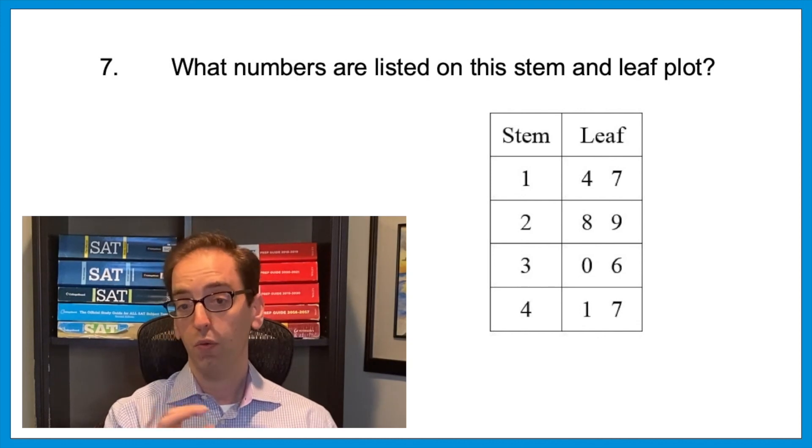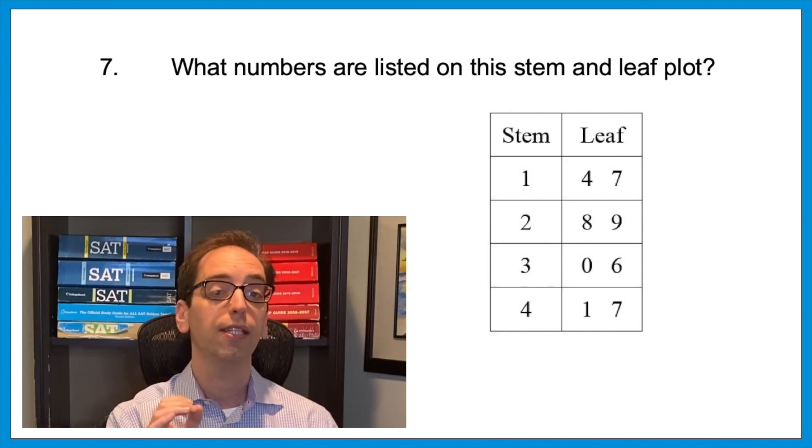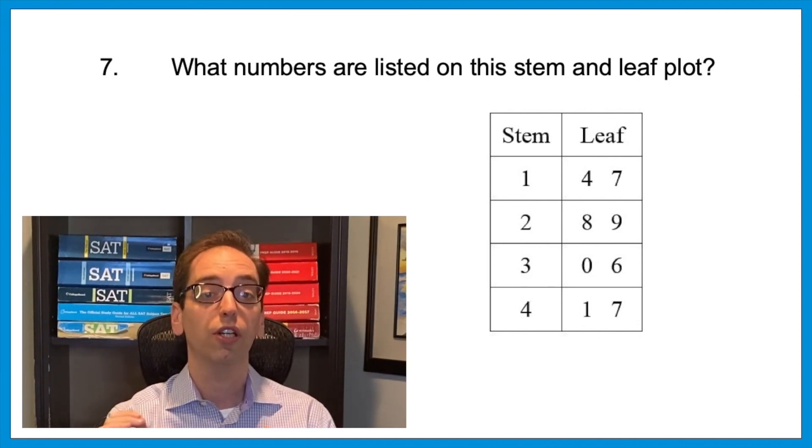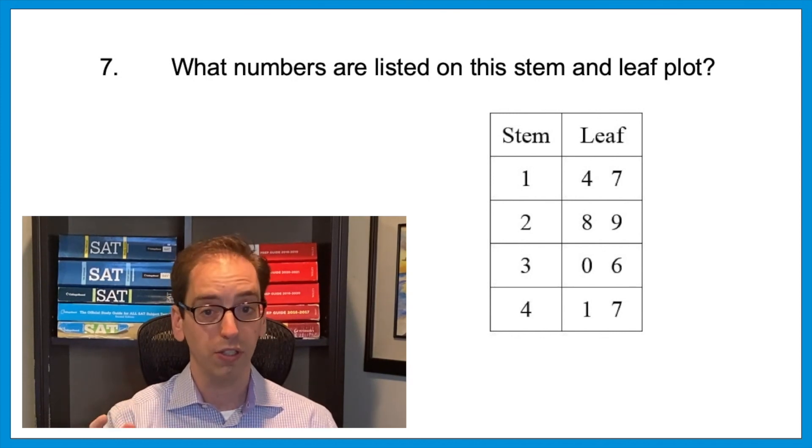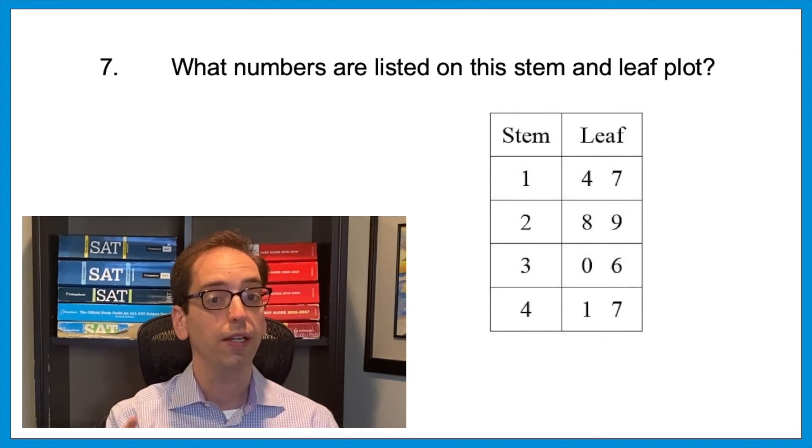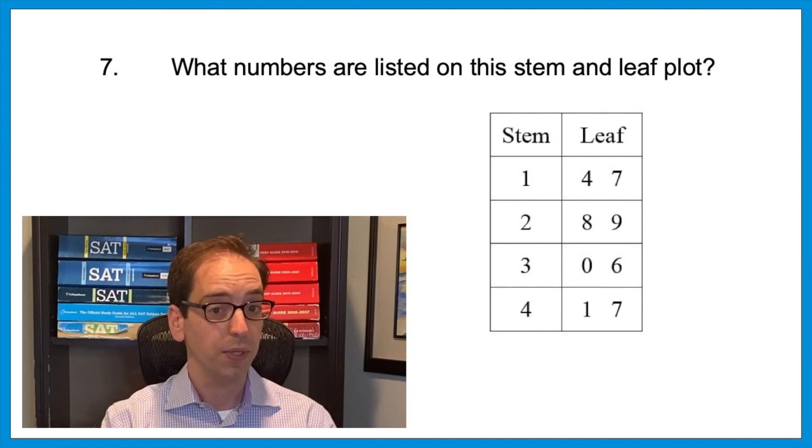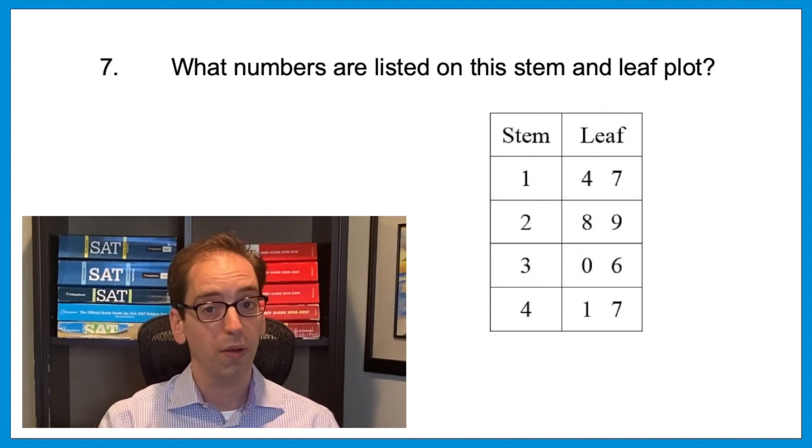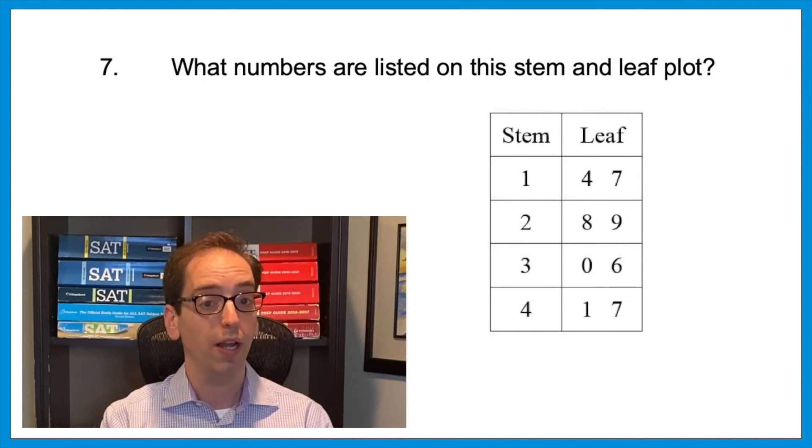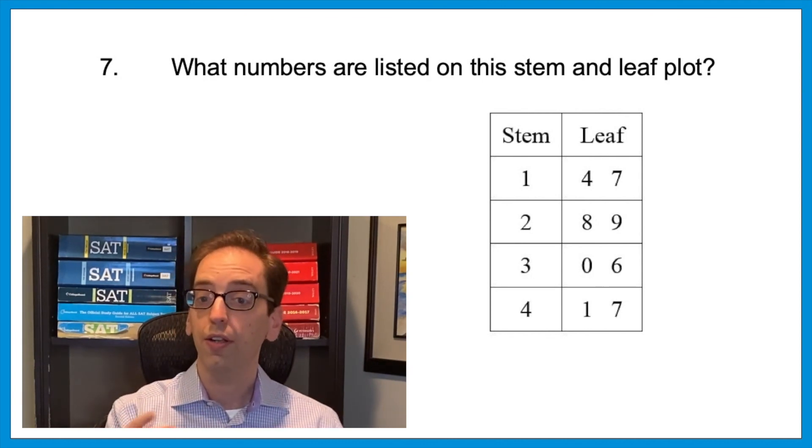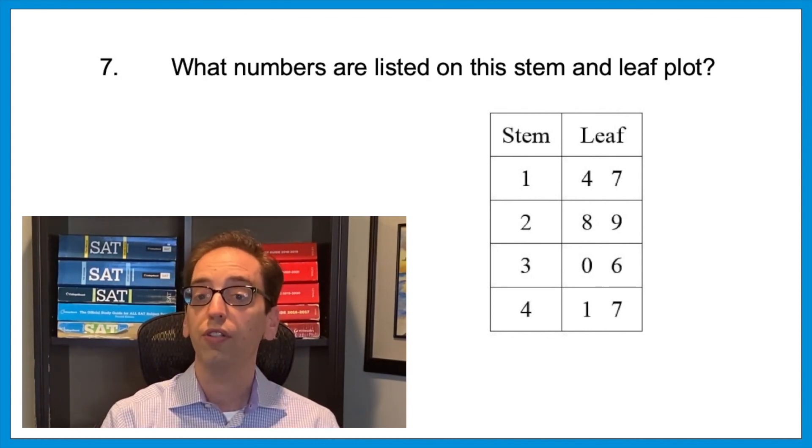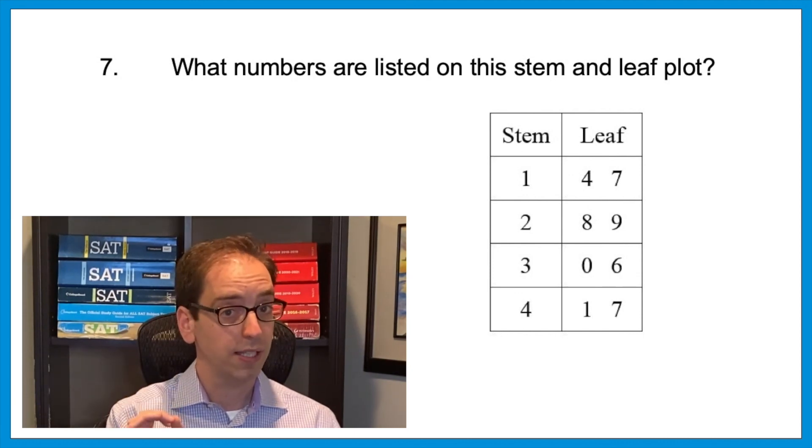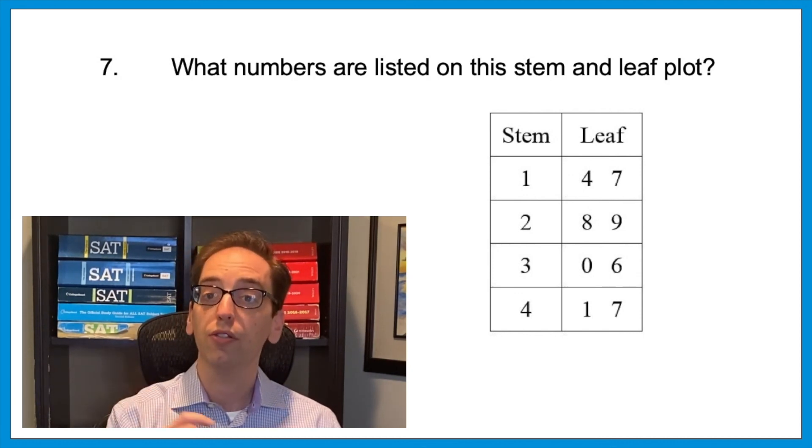What do I mean by that? Well, in that first row, the one, four, seven, the one is the tens digit that goes with each digit of the four and the seven in the ones digit. In other words, it's a 14 and then a 17. Let's do it again. In the next row, the two represents twenty-something. With the other numbers, it's 28 and 29. And then so on. 30, 36, 41, 47. The stems digit represents the tens, and the leaf digit represents the ones.